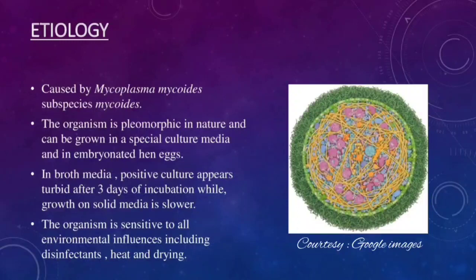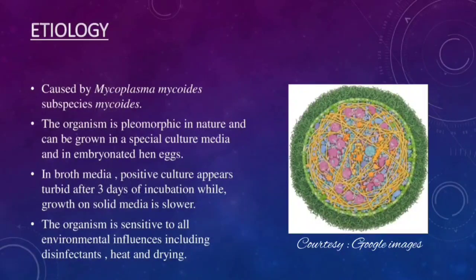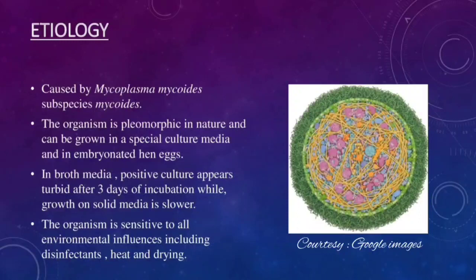The disease is caused by Mycoplasma mycoides subspecies mycoides. This organism was previously denoted as Asterococcus mycoides. The organism is pleomorphic in nature, occurring in rings, globules, filamentous, and bizarre forms. The organism can be stained by Giemsa stain. In broth media, positive culture appears turbid after three days of incubation, while growth on solid media is slower. The organism is sensitive to all environmental influences, including disinfectants, heat, and drying.